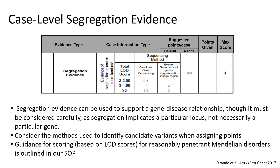Moving on to segregation evidence. If a variant is observed within the context of a family exhibiting segregation, you can award points for the variant following the procedures we just discussed and for the segregation if it meets certain parameters. In general, we've opted to categorize segregation evidence by LOD scores. LOD scores provided by authors can be used here. If a LOD score is not provided, one can be estimated for reasonably penetrant Mendelian disorders across multiple families by counting the number of times the variant segregates with affected individuals in a family. More points should be awarded if the variants were identified using genome-wide approaches such as exome or genome sequencing, and fewer points if variants were identified using candidate gene sequencing approaches. The maximum number of points attributable to segregation evidence is 3.